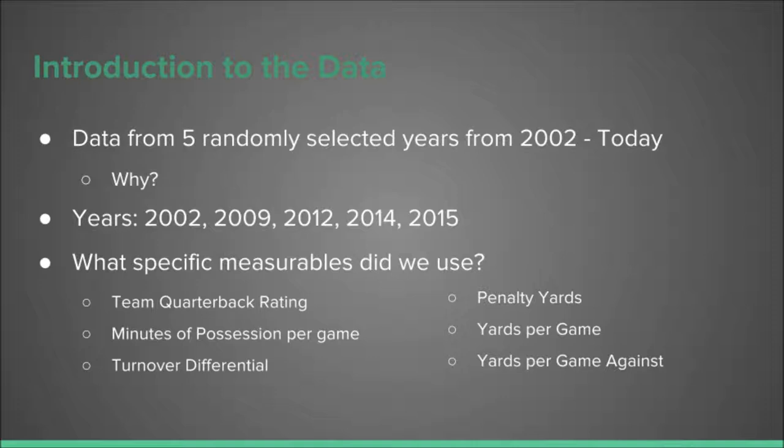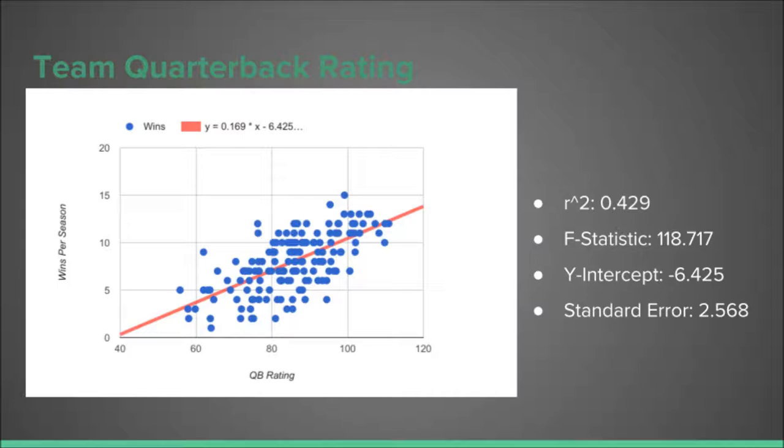The data that we collected came from five different NFL seasons from 2002 to today. We chose this range because 2002 was the first year that the NFL became a 32-team league. The reason for using five seasons as opposed to all seasons during this time frame was due to the sheer amount of data this would require. The seasons were selected using a random number generator.